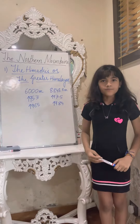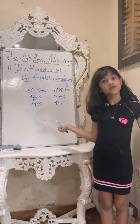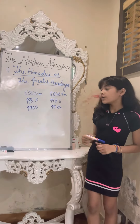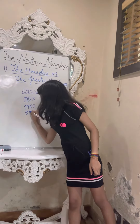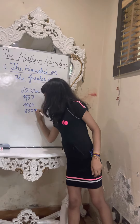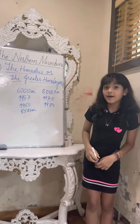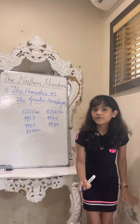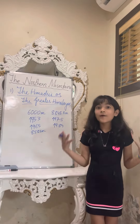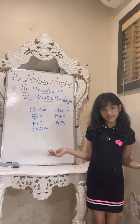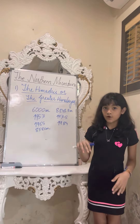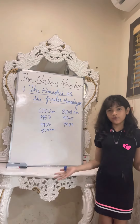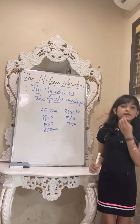The Himalayas also include many peaks like Kangchenjunga, which is 8,586 meters above sea level, and Nanga Parbat. It also includes important passes. A pass is a path or passage which helps us to cross a mountain.